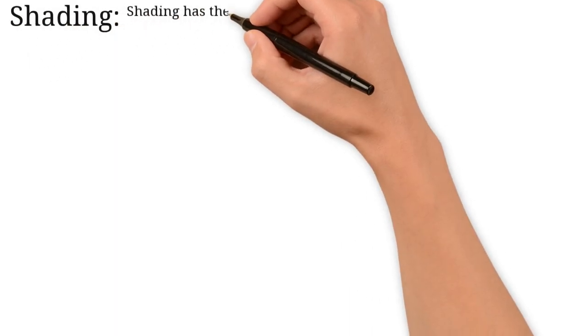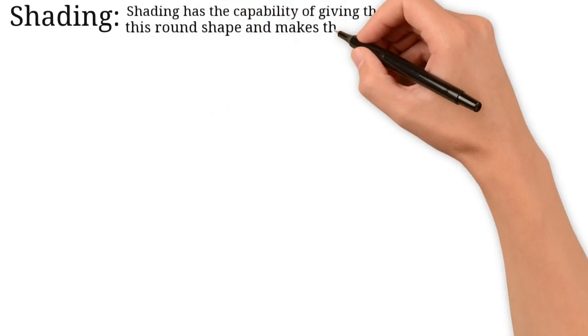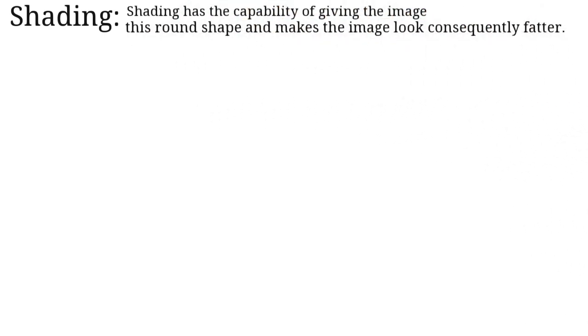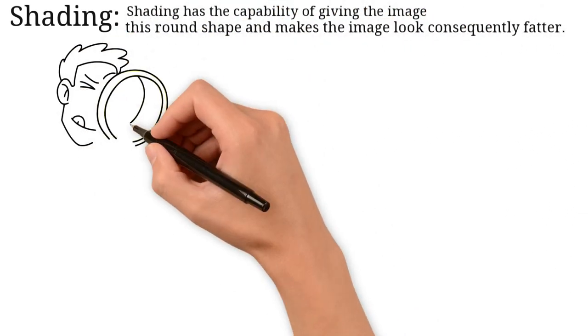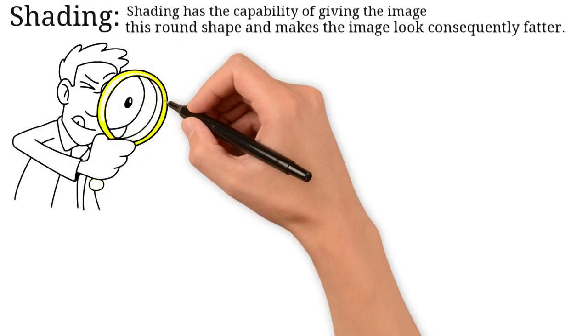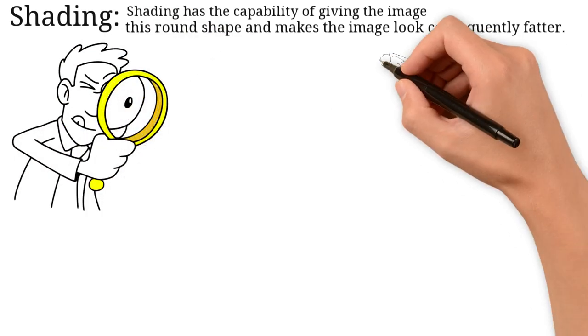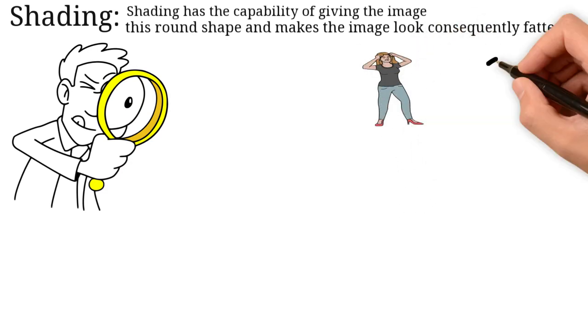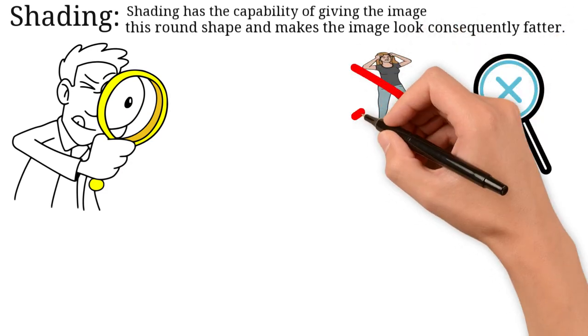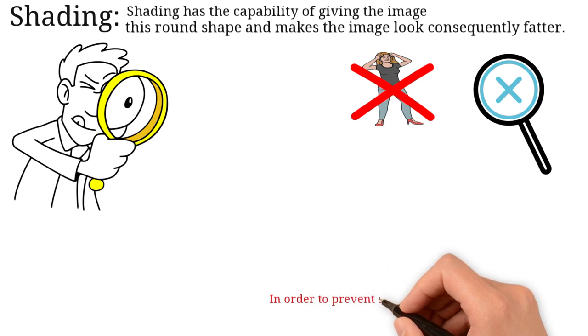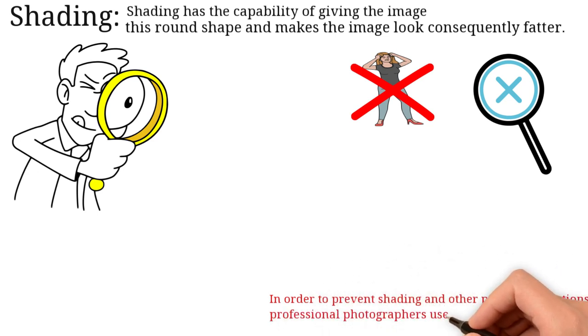Shading. Shading has the capability of giving the image this round shape and makes the image look consequently fatter. When the camera lens happens to have a short focal length, that is when this phenomenon occurs. That is why it is guaranteed that cameras with a longer focal length will not make you fatter or bigger. In order to prevent shading and other possible distortions, professional photographers use 85mm, 135mm lenses.